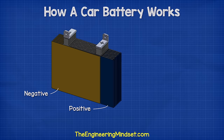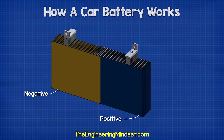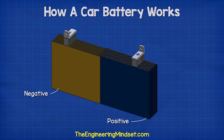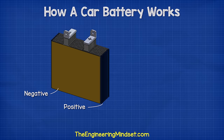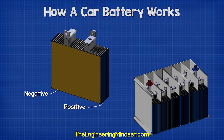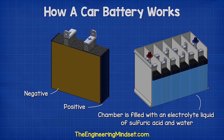The positive and the negative plates sit between each other with a small gap between each plate. The chamber is then filled with an electrolyte liquid of sulfuric acid and water — hence the battery is called a lead acid battery.